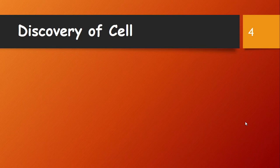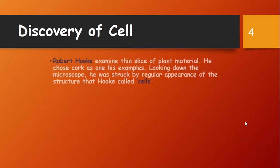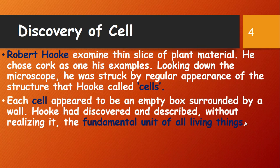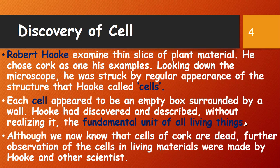Now we are going to explain how cells were discovered. One scientist called Robert Hooke was the first to observe specimens of plant material under the microscope. He found some boxes and called those boxes 'cells.' Robert Hooke was completely unaware that he had discovered a very important unit of all living organisms. Each cell appeared to be an empty box surrounded by a wall. Hook had discovered and described, without realizing it, the fundamental unit of all living things, although we now know the cells of cork are dead.